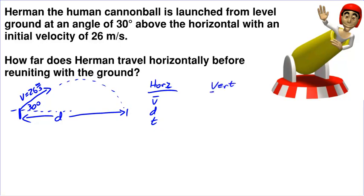And vertically, let's start by calling up the positive direction. VI, VF, D, A, T. The only thing we really know is acceleration here is going to be negative 9.81 meters per second squared.